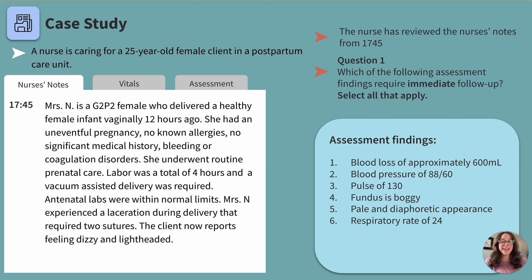Let's look at the correct and incorrect answers. Answer choice one — blood loss of approximately 600 mLs — is correct. This is a large amount of blood loss post vaginal delivery; over 500 mLs for vaginal delivery is abnormal and requires immediate attention. Answer choice two — blood pressure of 88 over 60 — is hypotensive and is an indicator of hypovolemia, potentially related to blood loss. Answer choice three — a pulse of 130 beats per minute — is elevated; tachycardia in this scenario could be a compensatory response to hypovolemia due to blood loss, indicating hemodynamic instability.